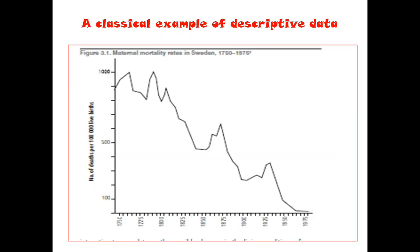So all these things you can see — an example of descriptive data. This is the number of deaths per 1 lakh live births. You can see that the death is going on decreasing as time goes forward. This is from 1750 to 1975. The number of deaths is decreasing over this period. This is data of child death among 1 lakh live births. So this is an example of descriptive data.